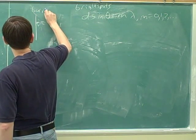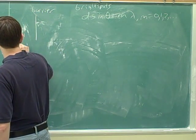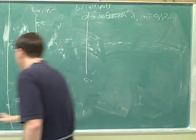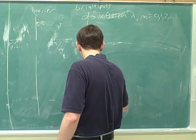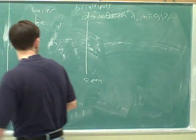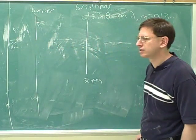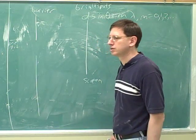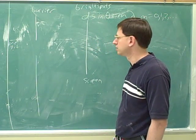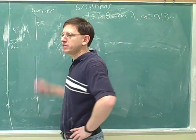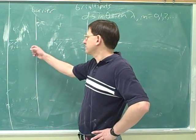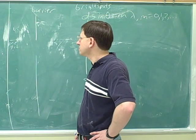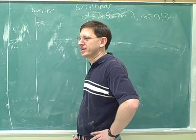Here we have the barrier, one slit, and here we have the screen with our center line. It would seem like this would not be interference anymore, because all the light is going through the same slit, so it would seem like if it stays in phase, it would still be in phase. However, here we use Huygens' Principle.